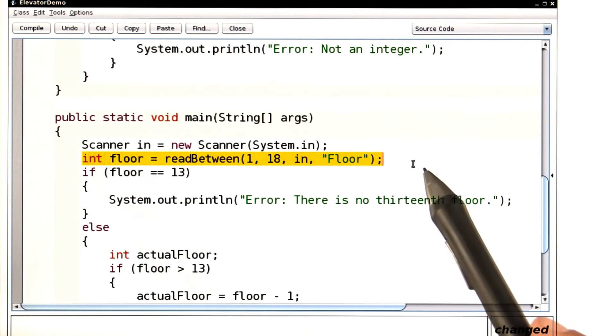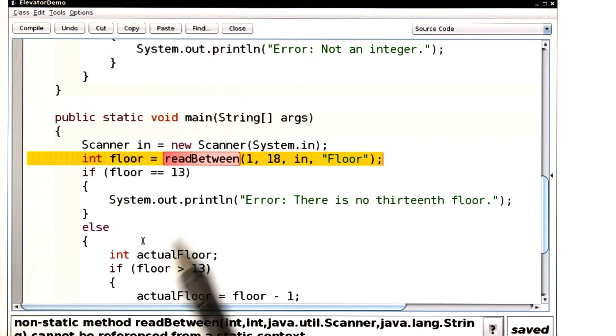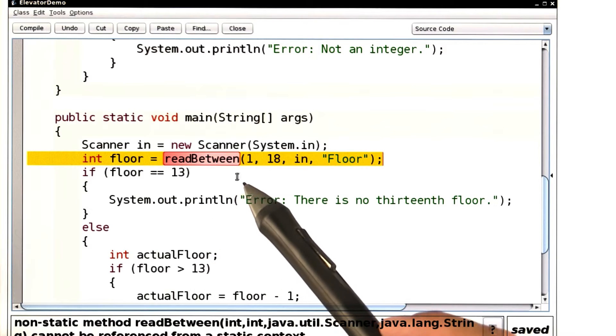but there's a problem. When I compile it, I get an error message, and that error message right now must really appear like gibberish to you, where it talks about non-static methods and static methods. So let me explain what's happening here and why the compiler is unhappy.